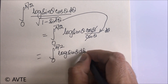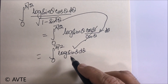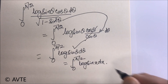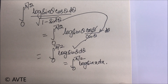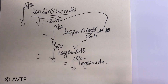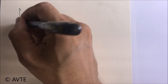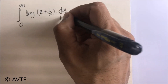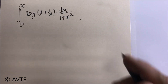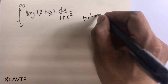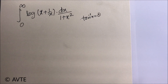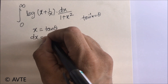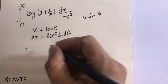I'm not solving this here because we've already posted the link — you can also change the variable back to the original, which is possible only in definite integration. Now I'm taking one more question: ∫₀^∞ log(x + 1/x)/(1+x²) dx. If you are good at definite integration you can put tan⁻¹(x) = θ directly. Otherwise, put x = tan θ, so dx = sec²θ dθ.